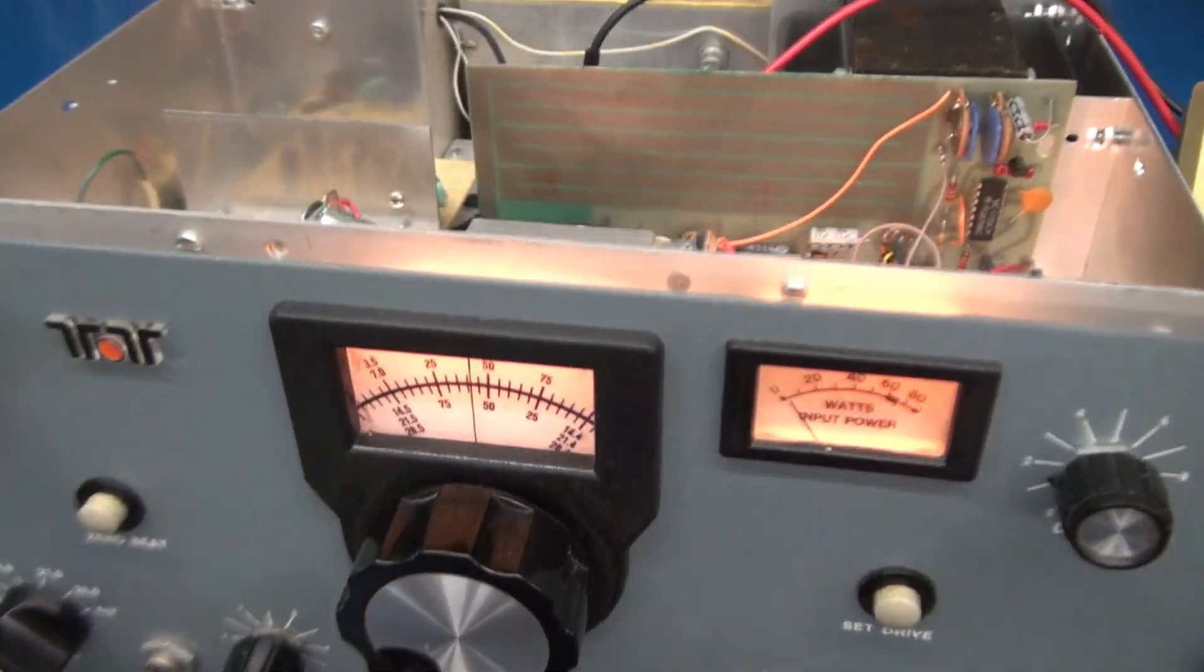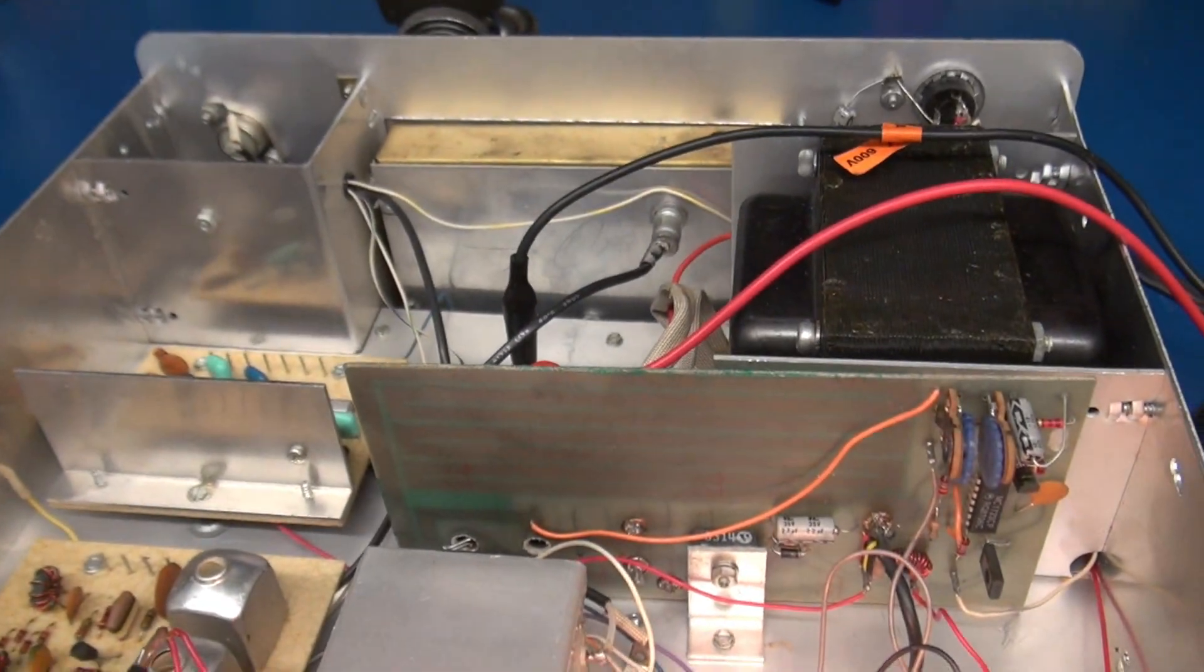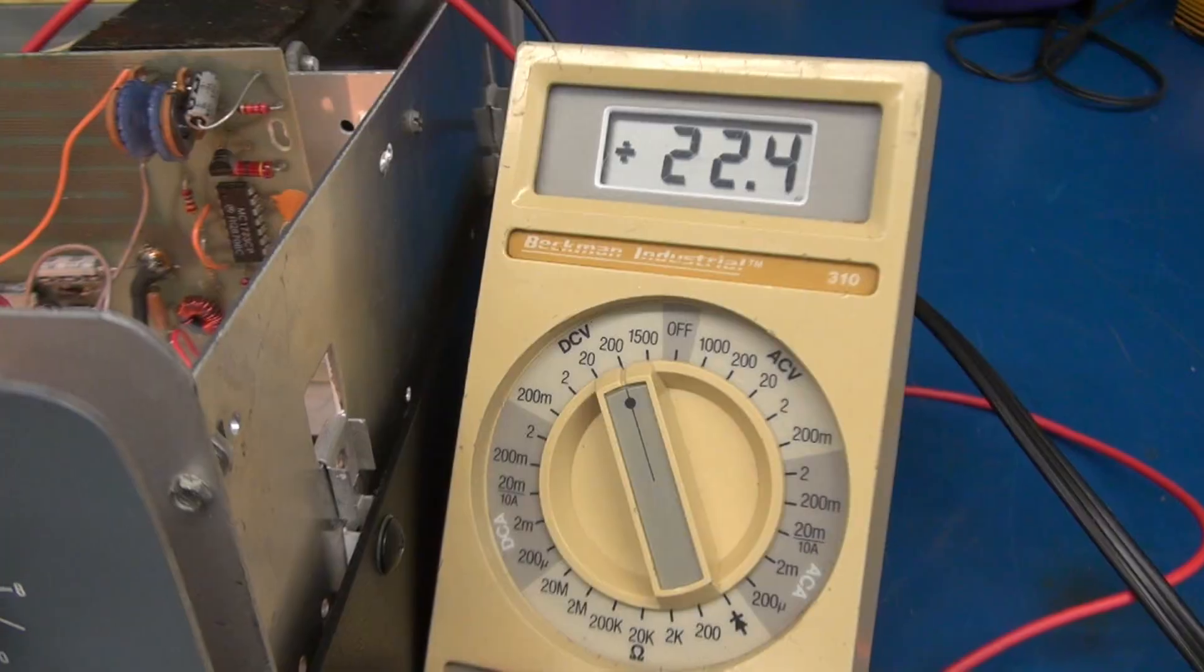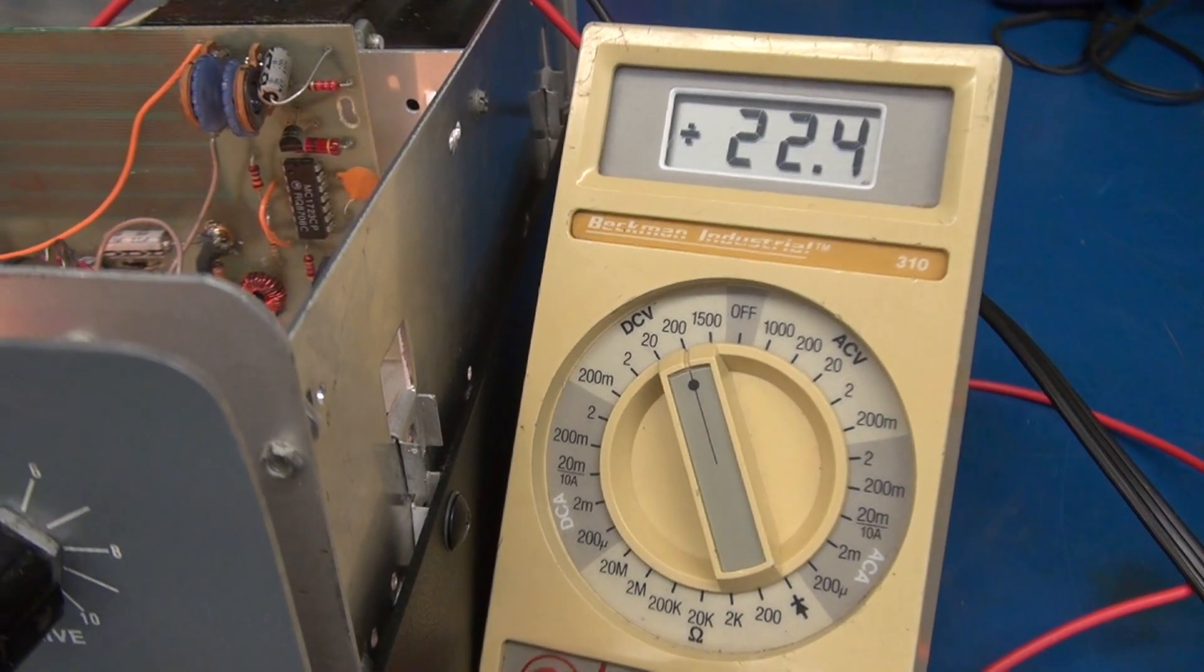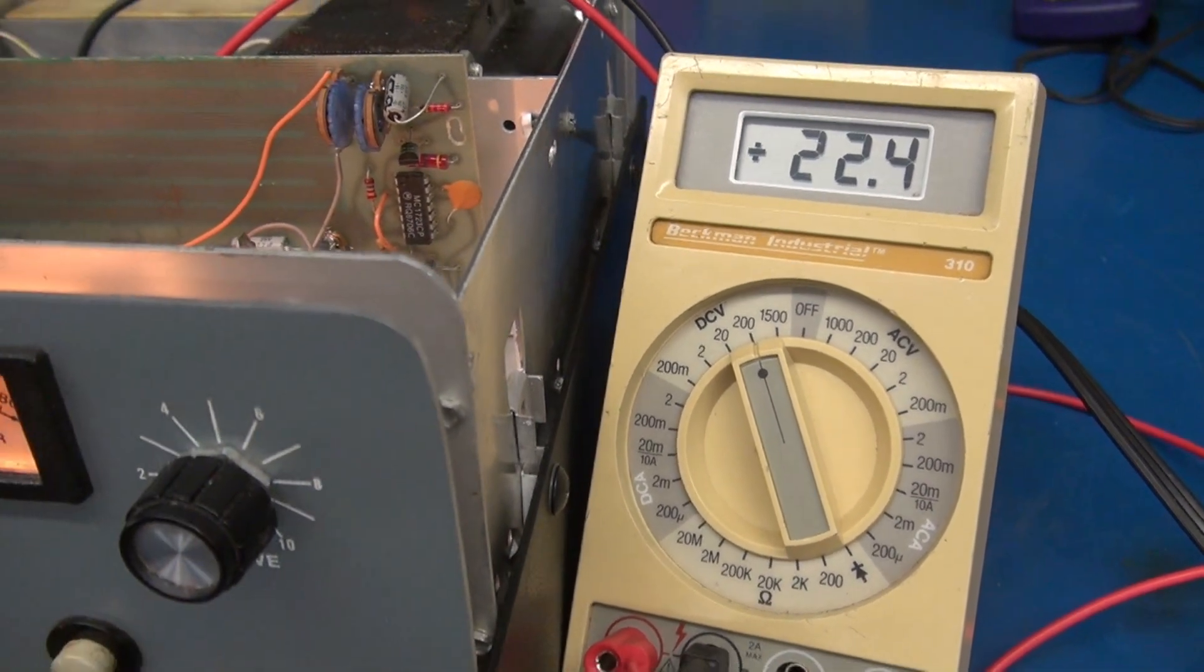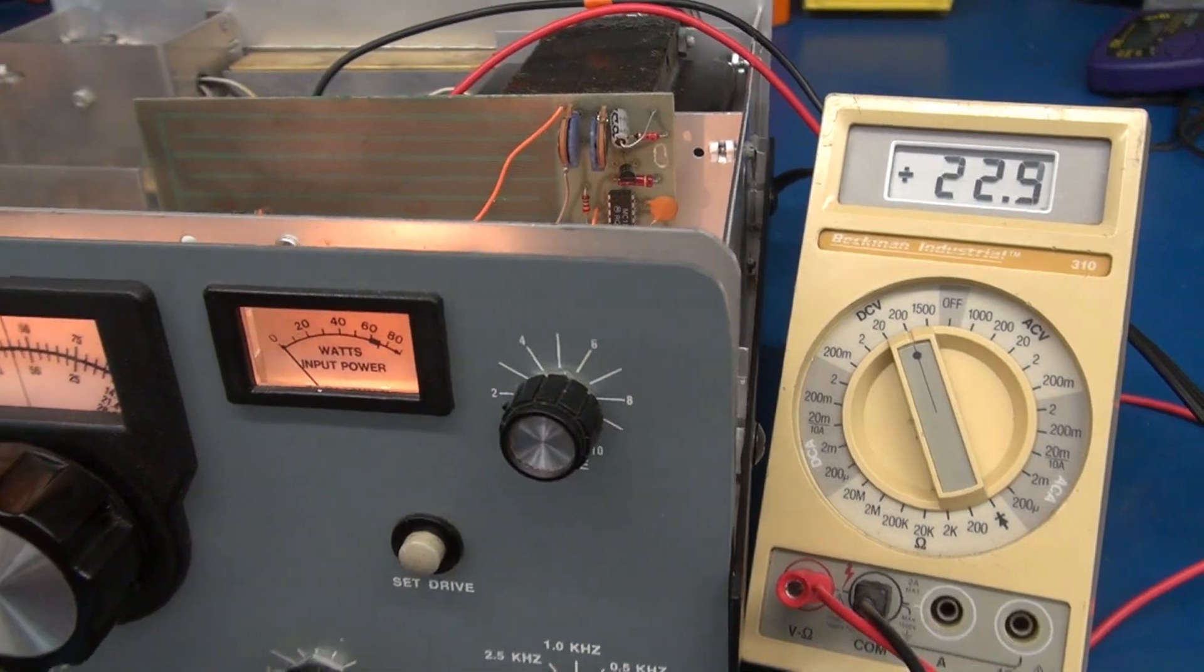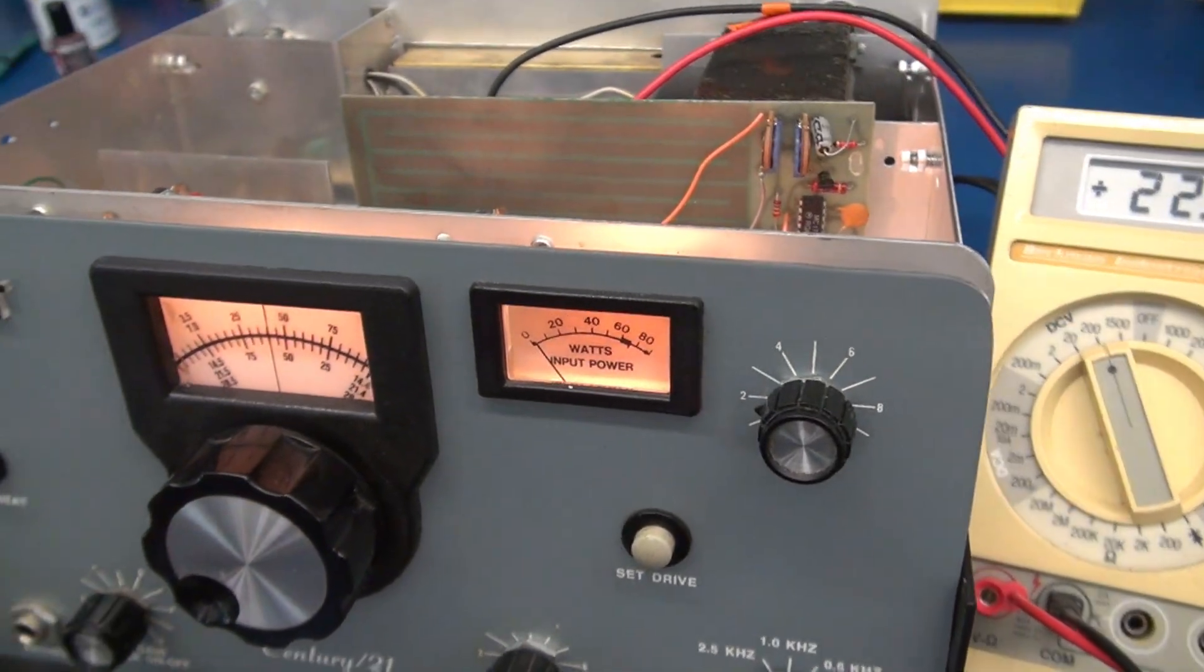All right, powered up the Tentec. No smoke. And I'm monitoring the voltage right on the filter cap, which is 22.4 volts. Now remember, the original filter cap was a 25-volt cap, and these new ones are 35.